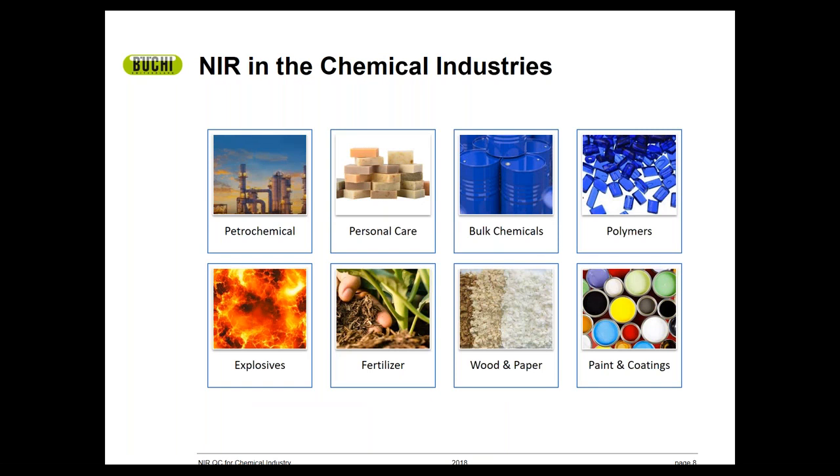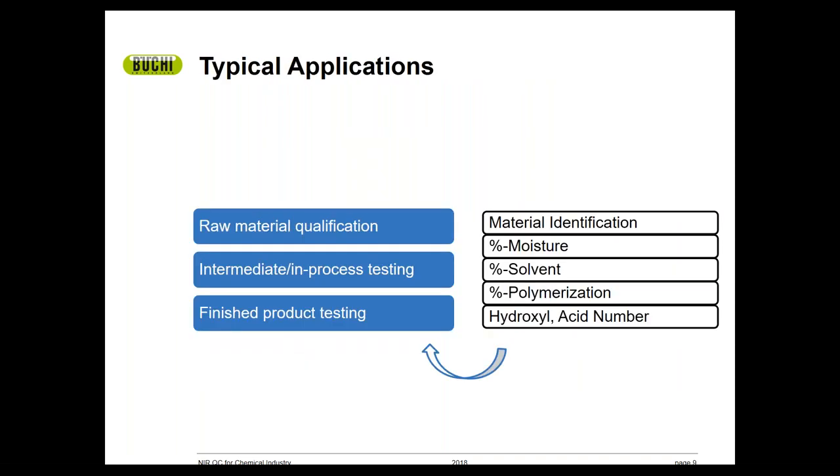NIR measurements are prevalent across a wide range of products under the broad umbrella of the chemical industry. These images indicate some of the products that have published NIR applications associated with them. From petrochemical and personal care items to paint and coatings, there are a few key application themes consistent across these vastly different products. These themes are listed on the left side of the slide. Raw material qualification, intermediate or in-process testing, and finished product testing.